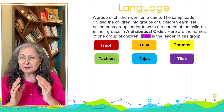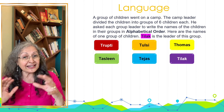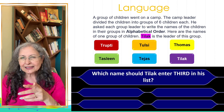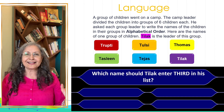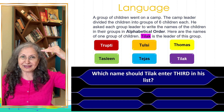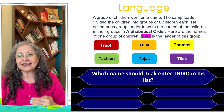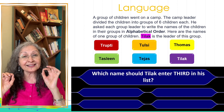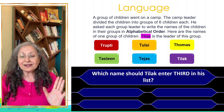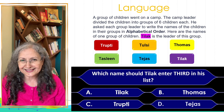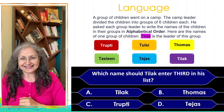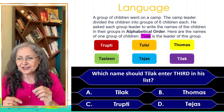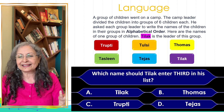One more in language: a group of children went on a camp. The camp leader divided the children into groups of six and said 'put the names in alphabetical order.' There is a distractor here — Tilak is the leader of the group, so students might think Tilak's name should come first. The question: which name should Tilak enter third in his list? I'm giving four of the six names: Tilak, Thomas, Tripti, and Tejas. Students need to know dictionary ordering of letters after the common T. The answer is Thomas.